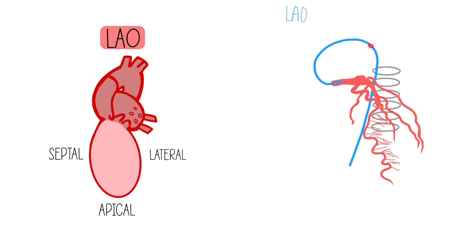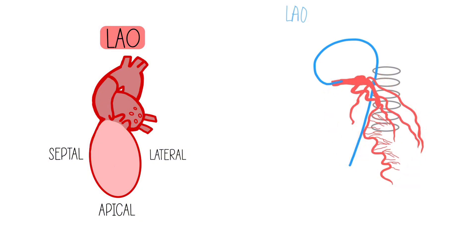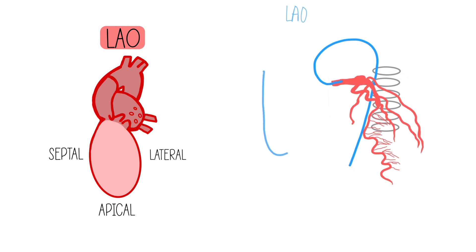LAO — not only is the catheter on the right hand side, but look at these epicardial vessels. Can you trace the heart shadow? You see that longer football shape, versus RAO which goes the other way. This is definitely an LAO view. In LAO, if we draw our little image to help us remember, the acronym is SAL — S-A-L — for septal, apical, and lateral. So what coronary artery reaches down towards the apex? The LAD. And what vessel feeds the lateral wall? The circumflex.